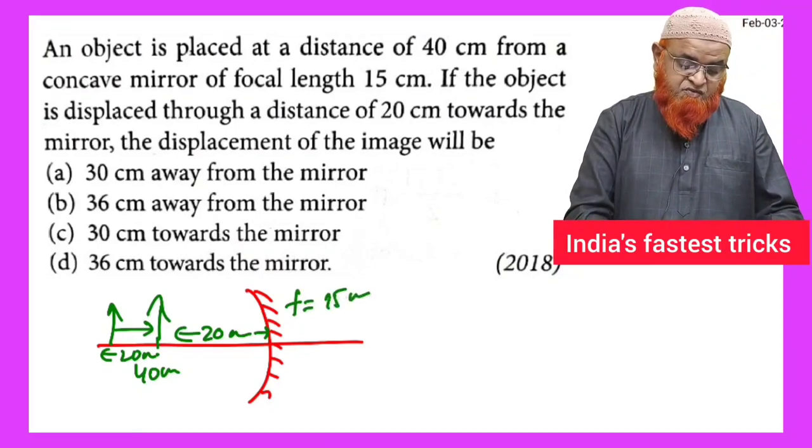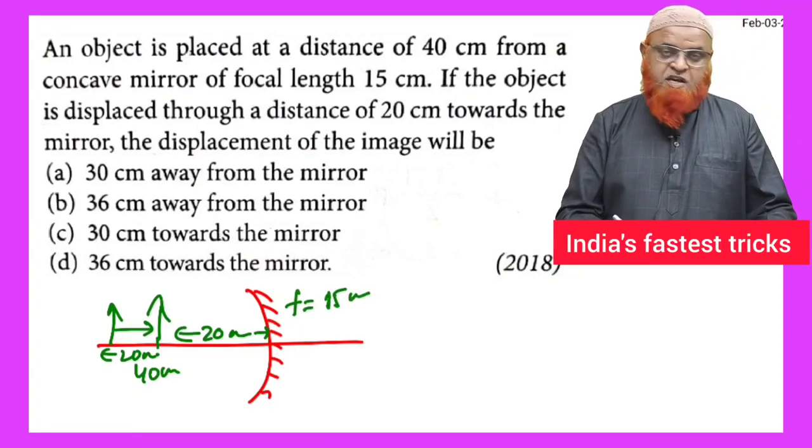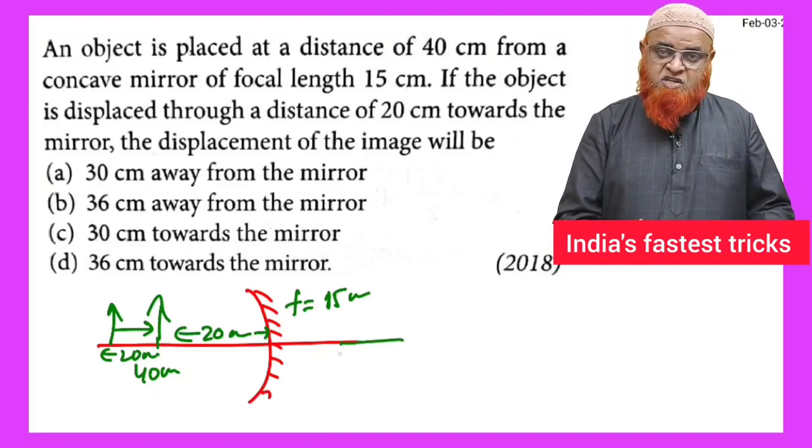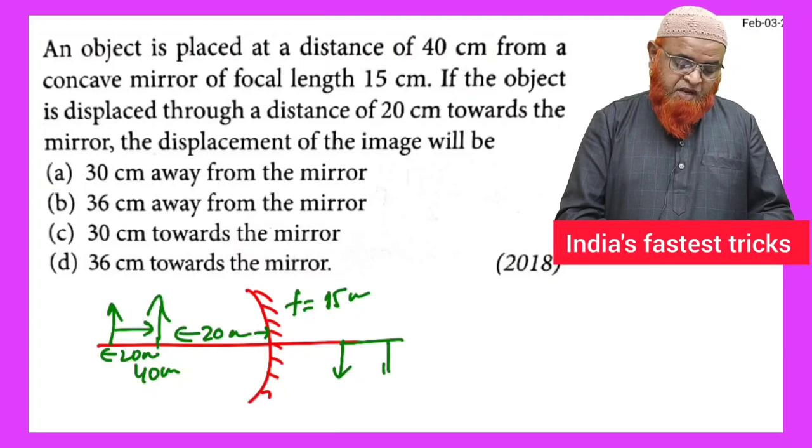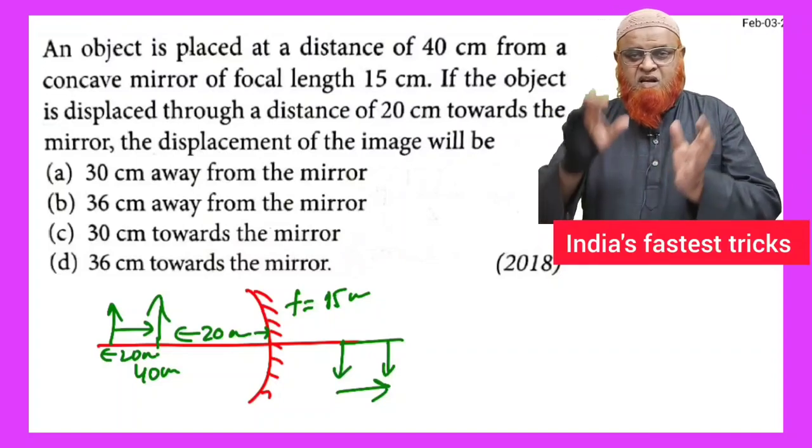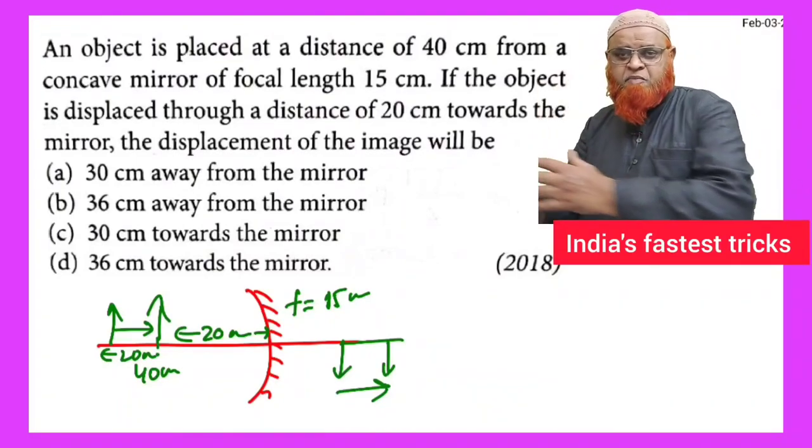He's asking us to find out how much the image is shifted. For example, previously the image will be here, means the image will be shifted towards the right. If an object is shifted towards the mirror, the image is shifted away from the mirror.